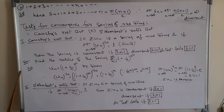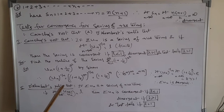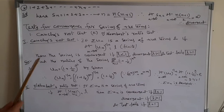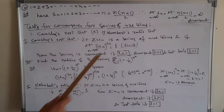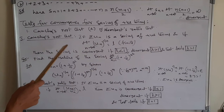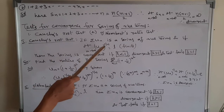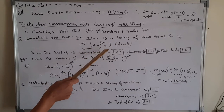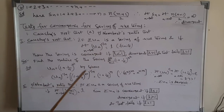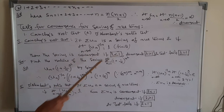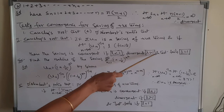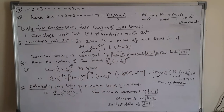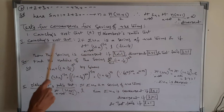Next is the test for convergence for series of positive terms. We will discuss two main tests: Cauchy's Root Test and D'Alembert's Ratio Test. For Cauchy's Root Test: if sigma un is a series of positive terms and the limit as n→∞ of un^(1/n) equals L (a finite quantity), then the series is convergent if L < 1, divergent if L > 1, and the test fails if L = 1.